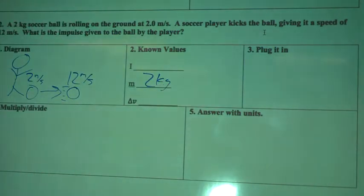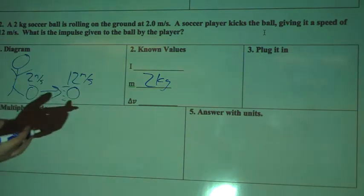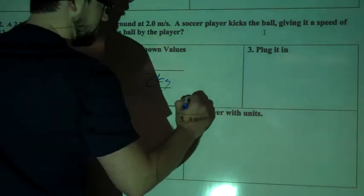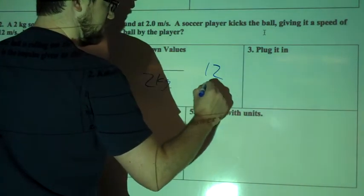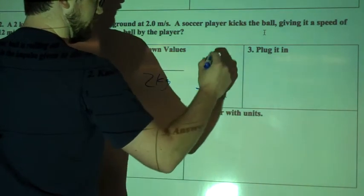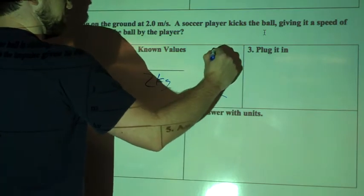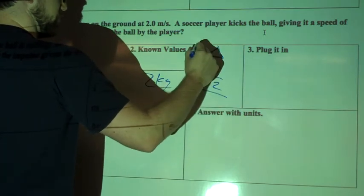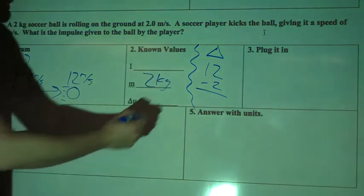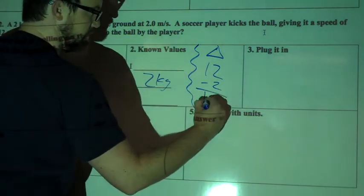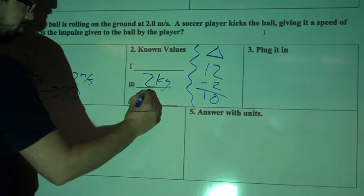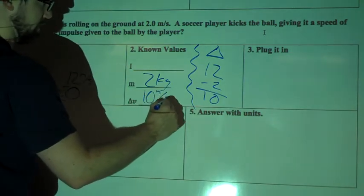And I do know the change in velocity, so it went from 2 to 12. If we're finding the change or difference between something, we can do 12 minus 2. We'll just put a triangle above this delta. So we're trying to find the change. Between 12 and 2, the change is 10, so the change in velocity is going to be 10 meters per second.